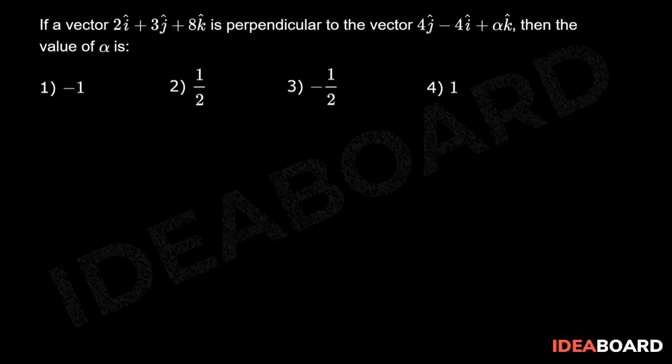So the first vector A is given as 2i cap plus 3j cap plus 8k cap and the second vector B is given as minus 4i cap plus 4j cap plus alpha k cap. So if A and B are perpendicular,